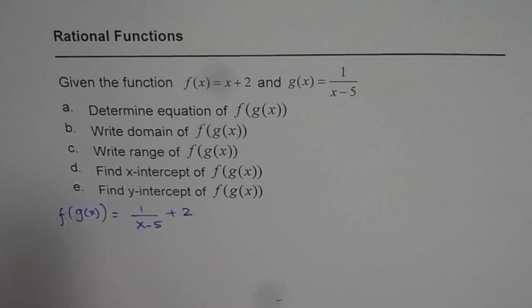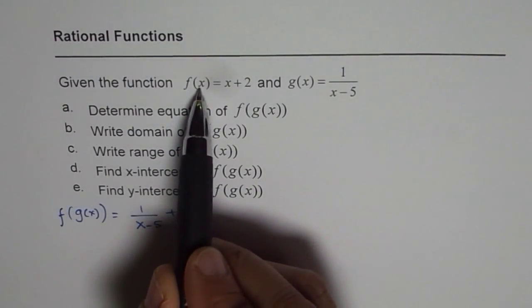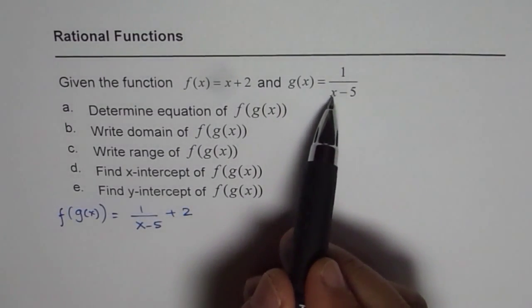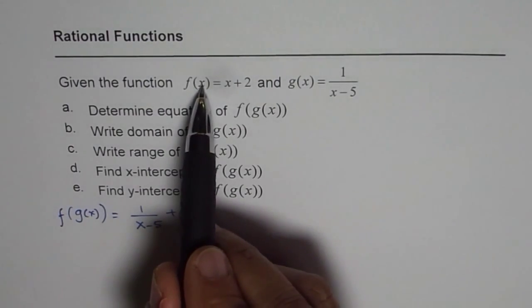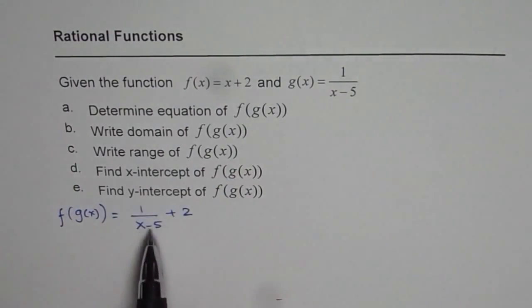f of g of x. f of x is x plus 2. Replace x with g of x. But g of x is 1 over x minus 5. Therefore, replace x with 1 over x minus 5. So that's what I did.